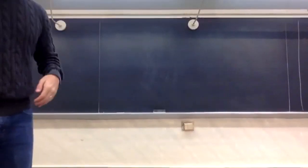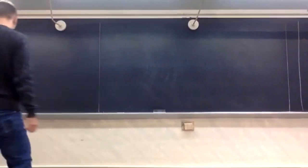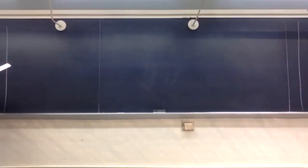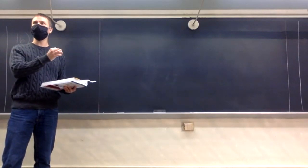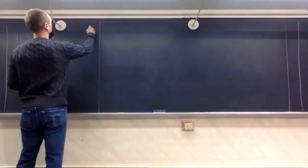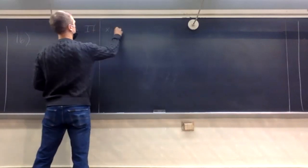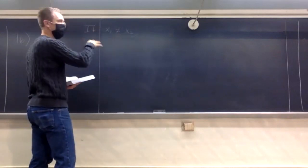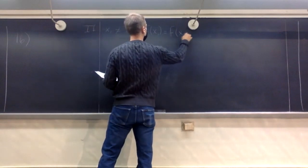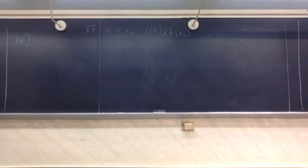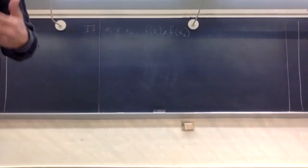We'll get started with section 2.8, which was on one-to-one functions. These are a very nice class of functions. One-to-one functions have this property that if you pick different inputs for your function, you are guaranteed a different output. So to write that down formally: if input one does not equal input two, then the outputs of the function at those two different inputs are also not the same. If you pick different inputs, you get different outputs. These are a very applicable type of function.